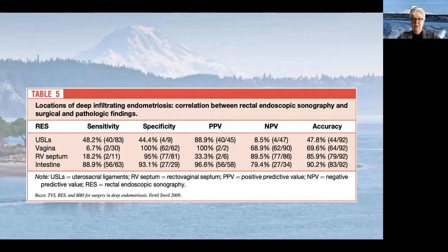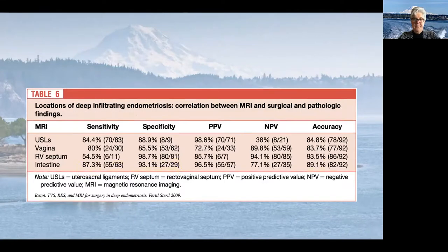Rectal endoscopic ultrasound was surprisingly less sensitive and specific than transvaginal ultrasound, with about a 5% lower diagnostic accuracy. MRI is even less, with 80% sensitivity, 93% specificity, and 89% diagnostic accuracy.